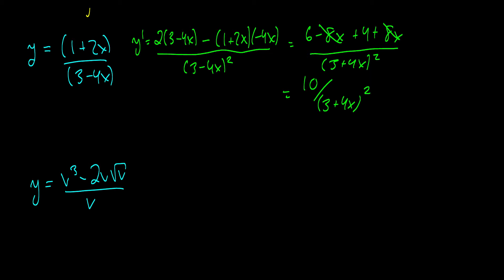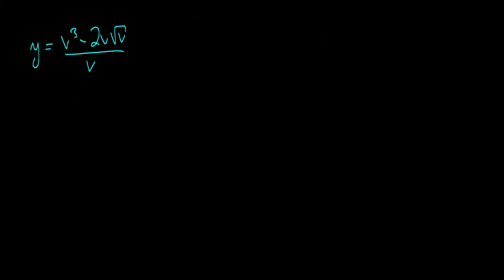And now we're going to move on to the one that might have given you some troubles or might have taken you more work than it should have because straight off the bat we can cancel out these v's. And this becomes y equals v squared minus 2 times v to the half. And this is a very simple problem because there's no product or quotient rules in here. This is just the derivative of v squared, which is 2v, minus the derivative of 2v to the one-half, which would be 1 over the square root of v.